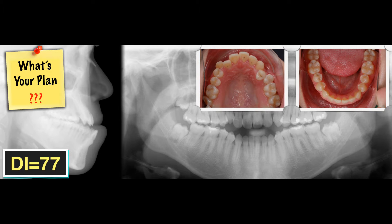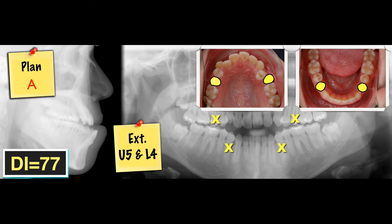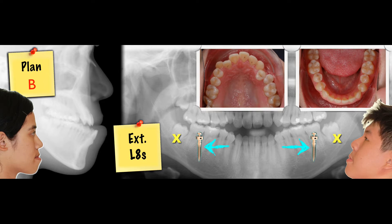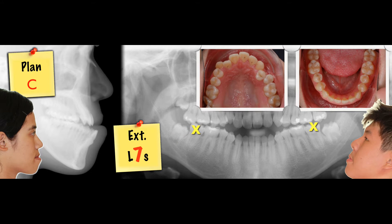What would be your treatment plan? No surgery. Plan A: four-premolar extraction. Plan B: extract the wisdom teeth. Plan C: instead of the third molar, we take out the second molar, so it will be easier to retract the lower dentition backward. And we decided to go for Plan C.